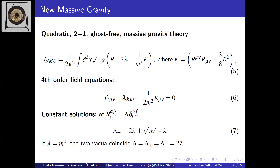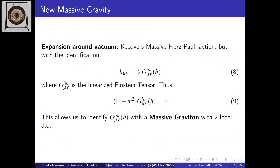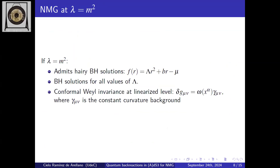New massive gravity is a quadratic 2+1 dimensional massive gravity theory with fourth-order field equations. The constant solutions are doubly degenerate, and at the special point where lambda equals m squared the two vacua coincide. Expanding around this vacuum recovers the massive Fierz-Pauli action with the identification that the graviton is the linearized Einstein tensor — a massive graviton with two local degrees of freedom.